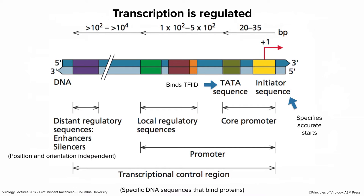Beyond the promoter are distant regulatory sequences, including enhancers and silencers. Enhancers can be 100 to 10,000 bases away and still regulate transcription — they either enhance or silence it. All of this: the distant sequences, local sequences, and core promoter, constitute the transcriptional control region. You can get basal transcription with just a core promoter, but in cells and for viruses, there's all sorts of additional regulation.